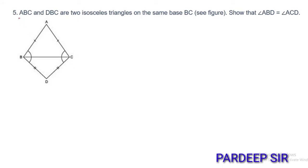Next question, question number 5. ABC and DBC are two isosceles triangles on the same base BC. So both triangles share the same base BC. See figure. We need to show that angle ABD equals angle ACD.